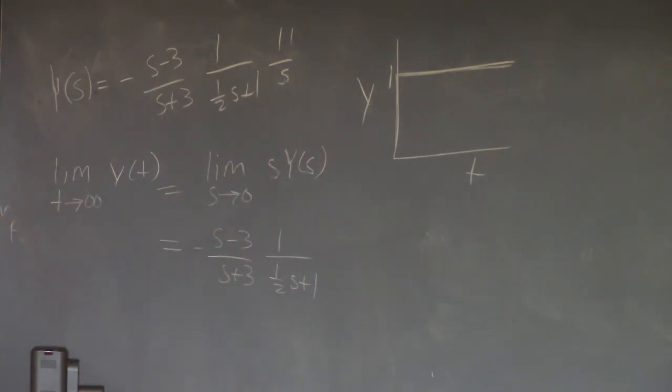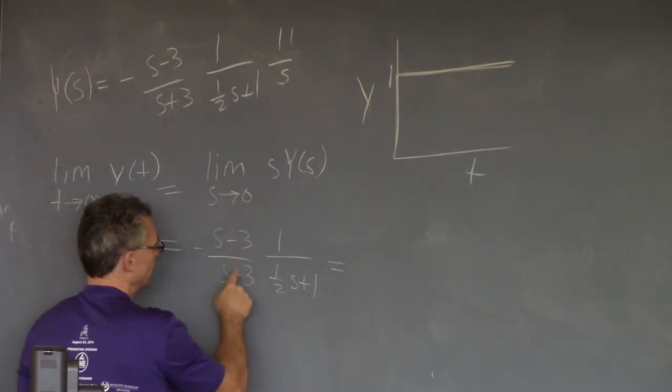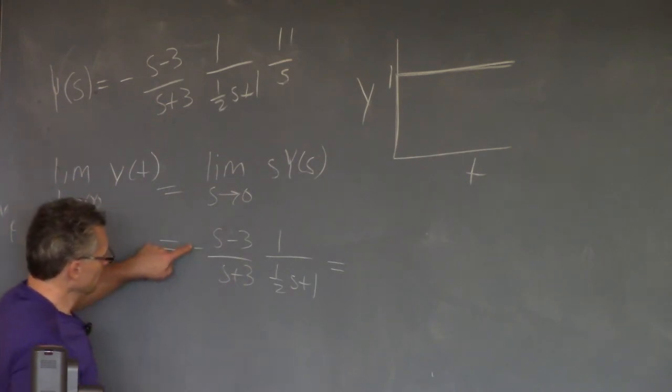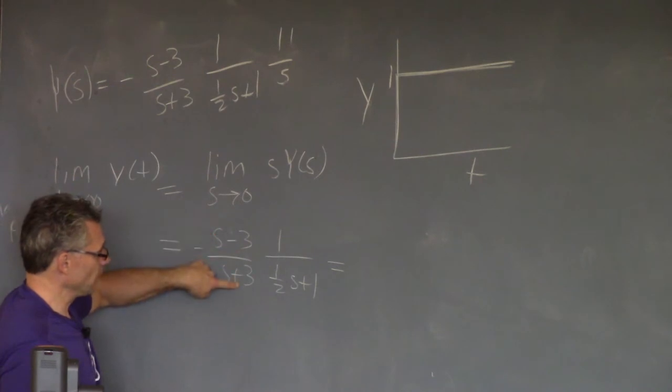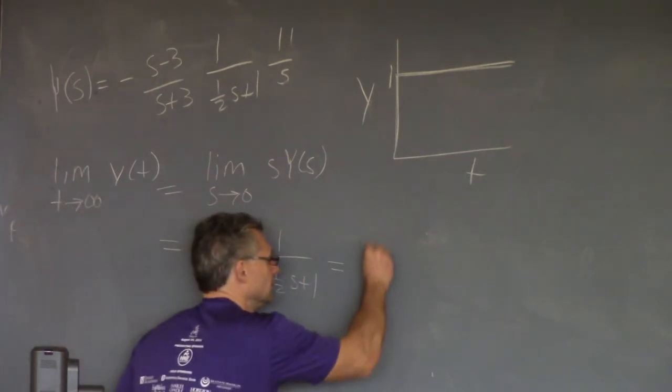Now, just substitute in s equals 0. So here I'm going to have, so substitute s equals 0, you have minus a minus 3, which is plus 3 over 3, so that's 1. You've got s, it's 1, OK, 1.